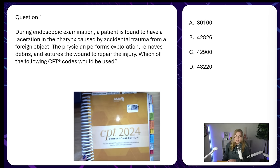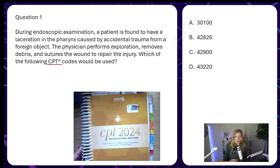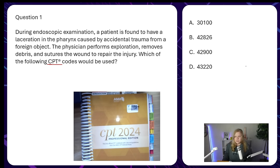If we look at the answers first, we can see the codes are somewhat spread — we have a 30000 code and then 42000 and 43000 codes. It might not make sense to go directly to looking up the codes. For this one, let's actually start in the index. With CPT you're not required to start in the alphabetic index the way ICD-10-CM requires — you can do more of a search-and-find approach.